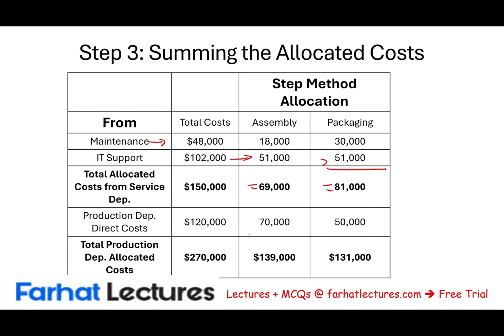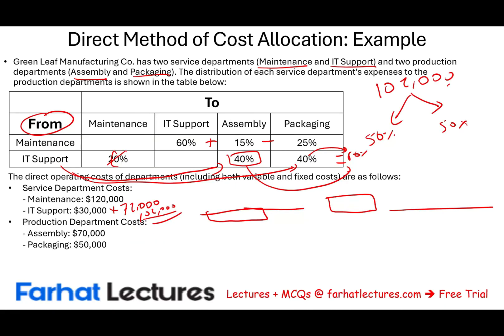Including the total production costs: assembly is $69,000 + $70,000 = $139,000; packaging is $81,000 + $50,000 = $131,000. Total production department cost allocated is $270,000: $150,000 from service departments and $120,000 from production departments.